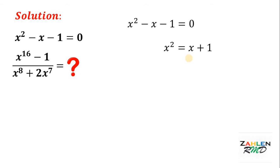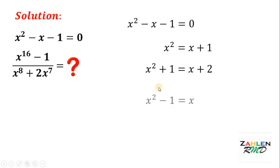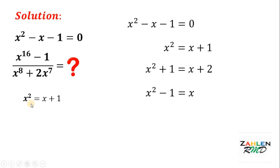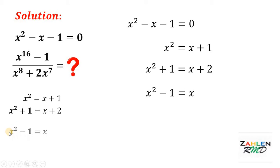From x squared equals x plus 1, if we add 1 to both sides, we get x squared plus 1 equals x plus 2. And if we subtract 1 from both sides, we get x squared minus 1 equals x. Let's collect these results: x squared equals x plus 1, x squared plus 1 equals x plus 2, and x squared minus 1 equals x.